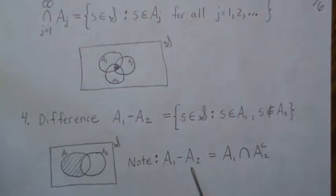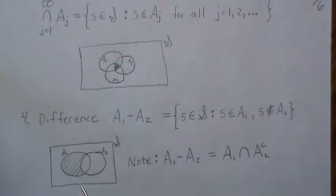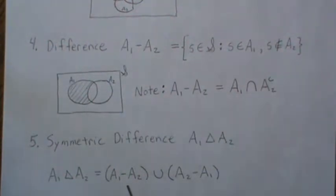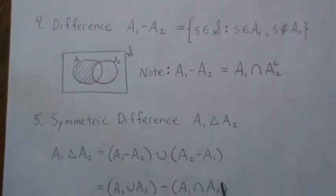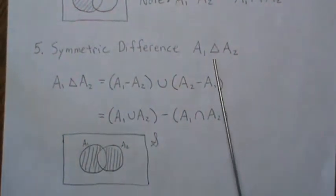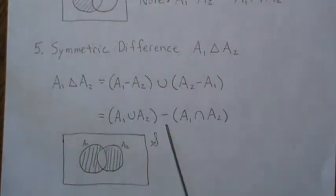One note: A1 minus A2 can actually be written using the intersection form — A1 intersect A2 complement. So A1 is here, and A2 complement is everything else, and the intersection gives that little piece. We also have what's called a symmetric difference: it's in A1 and not A2, or it's in A2 and not A1, but not both. You can think of it as A1 union A2, then subtract out the intersection.